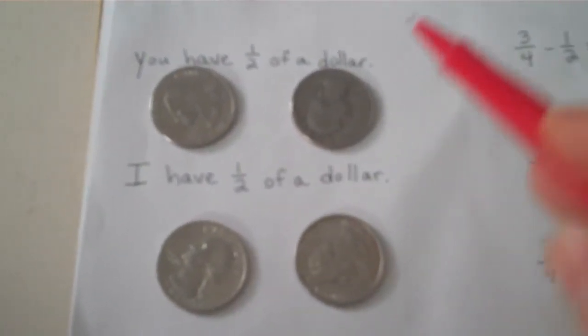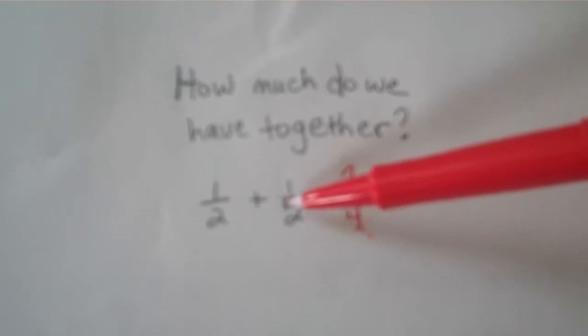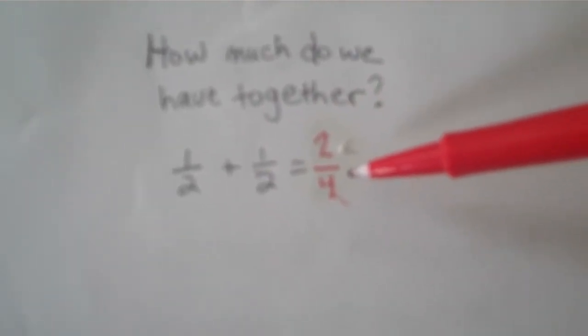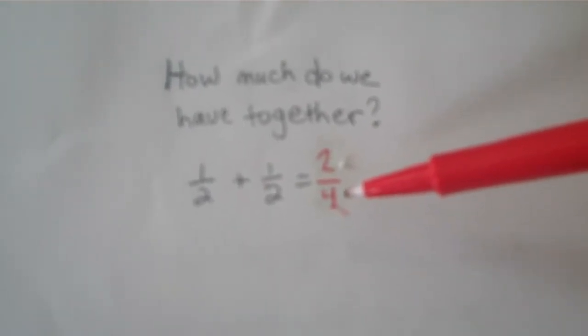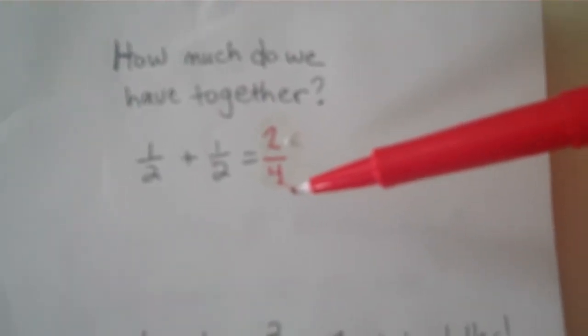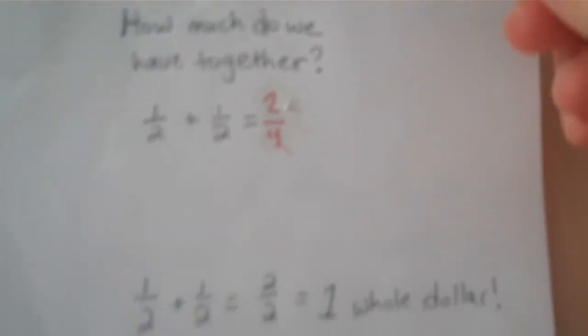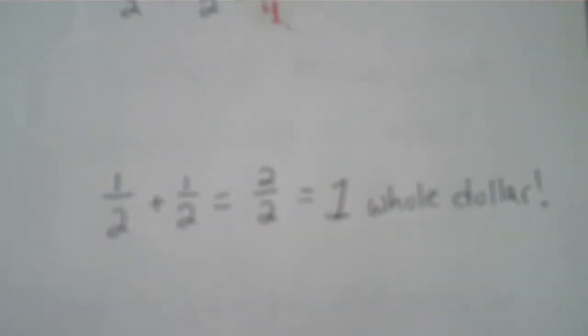But what happens if I add the numerators and the denominators? Your half dollar plus my half dollar equals half a dollar? Well, if you have 50 cents and I have 50 cents, we don't have 50 cents altogether. That doesn't make any sense. We have two halves or one whole dollar.